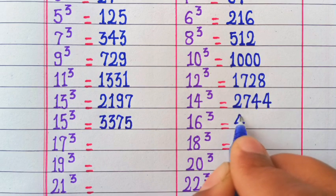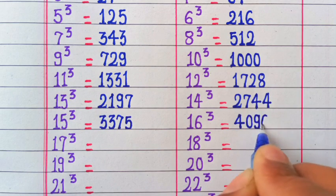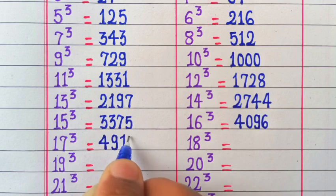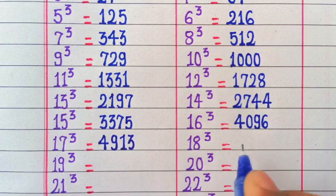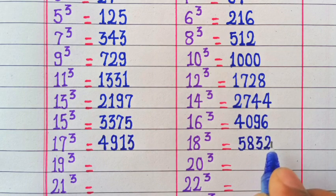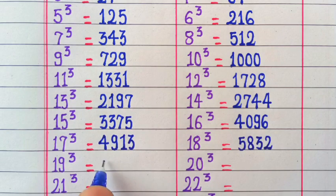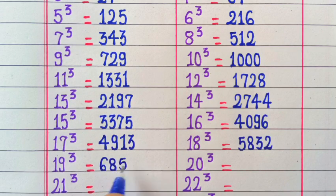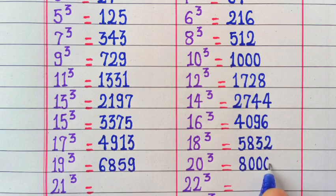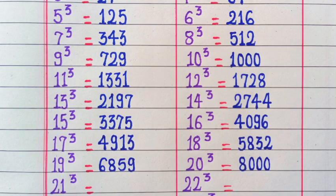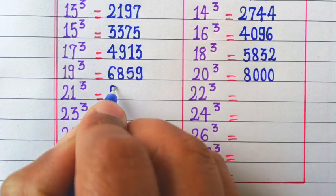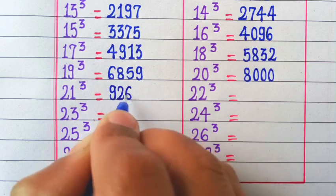16 cubed is 4096, 17 cubed is 4913, 18 cubed is 5832, 19 cubed is 6859, 20 cubed is 8000, 21 cubed is 9261.